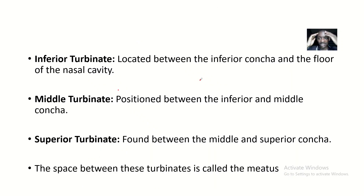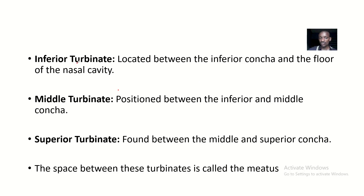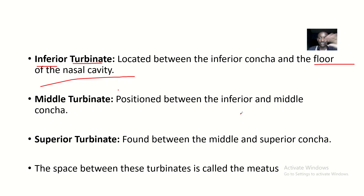So basically guys, in the nose we have the superior concha, middle concha, and inferior concha. Now between these conchae, we have areas called the turbinates. The inferior turbinate is located between the last concha and the floor of the nasal cavity. The middle turbinate is between the inferior concha and the middle concha. Then the superior turbinate is between the middle concha and the superior concha.